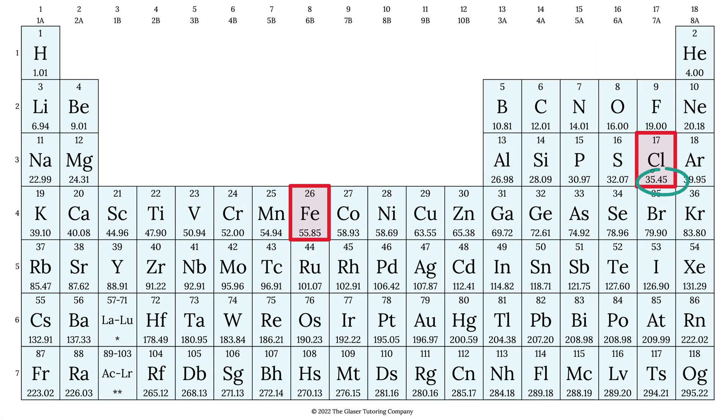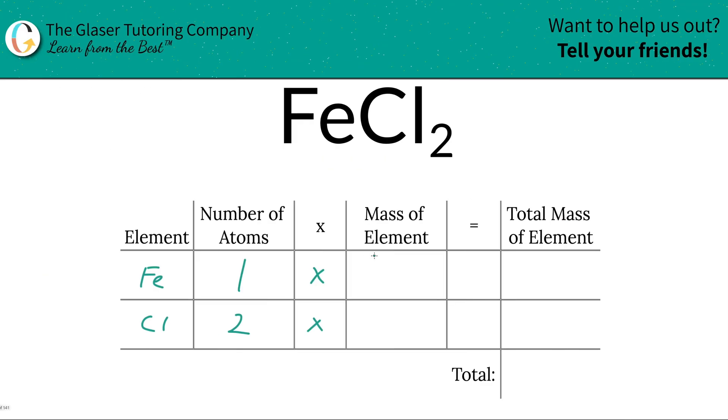Iron's mass is 55.85 and chlorine is 35.45. So we're going to write those in. 55.85 for iron and then chlorine is 35.45.